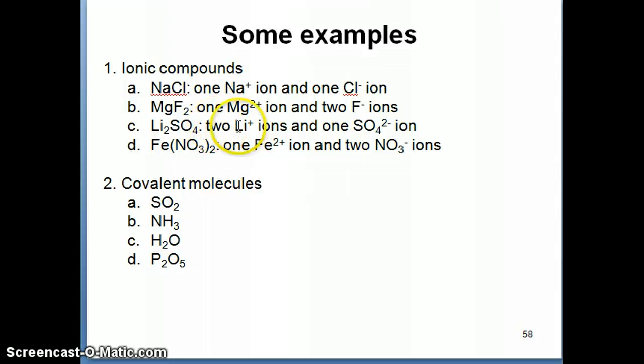Li2SO4 is an ionic compound because it has two Li+ ions, the lithium ion, and one sulfate ion, which is a polyatomic ion. Here's another example: Fe(NO3)2, one iron two ion and two nitrate ions, which is another polyatomic ion. Each of them has a charge of negative one.